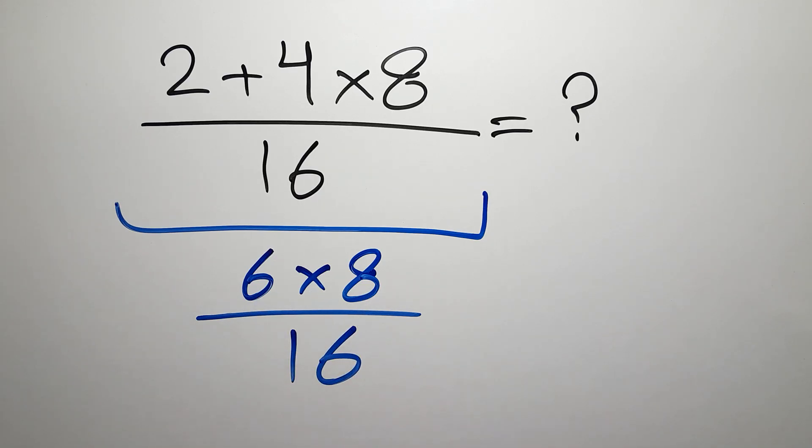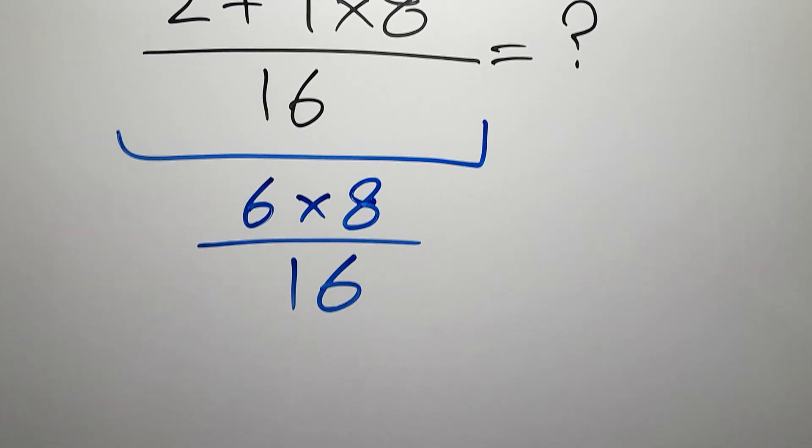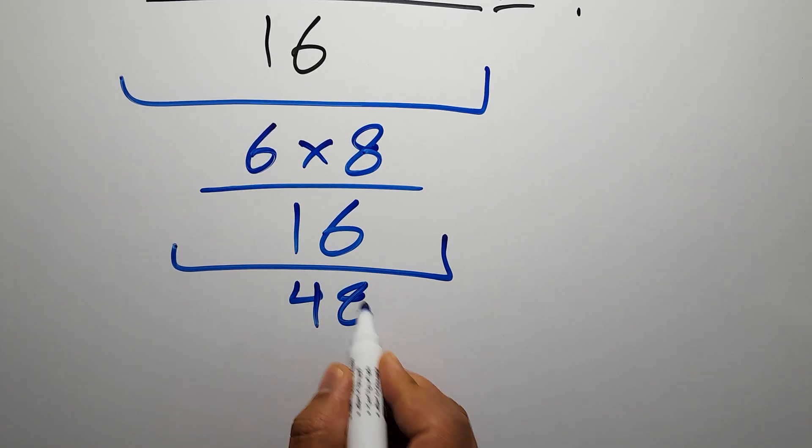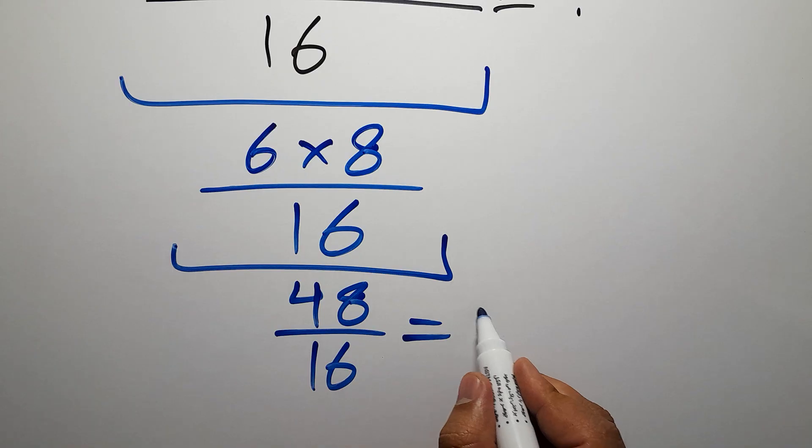6 times 8 gives us 48, 48 over 16, which equals 3.